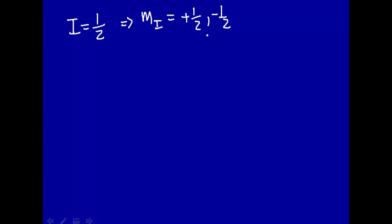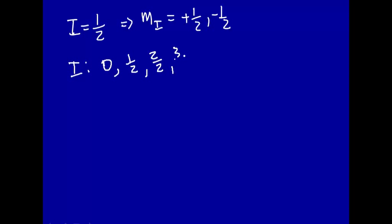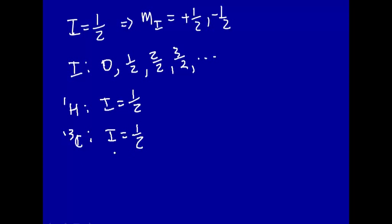So I can range from zero — with a spin of zero you can only have that one value — up to nuclear spin of one-half, two-halves, three-halves, and so on. Nuclei are fermions; they can have half-integer spin all the way up. Looking at common spins: protons have a spin of I equal one-half. Carbon-13 has a nuclear spin equal to one-half. Nitrogen-14, the common isotope of nitrogen, has a nuclear spin of one. So different nuclei have different spins.